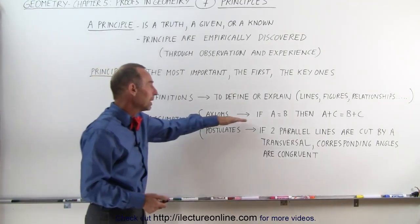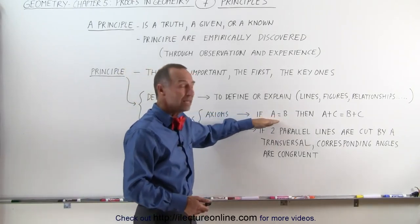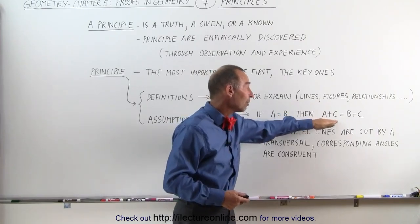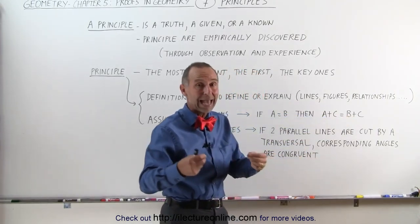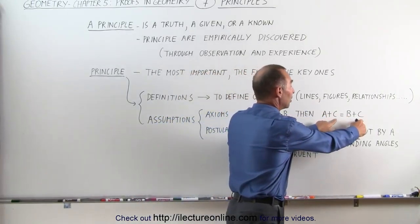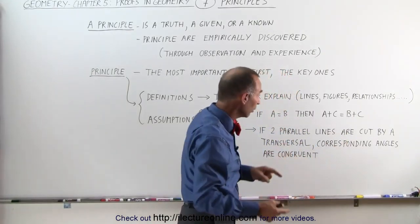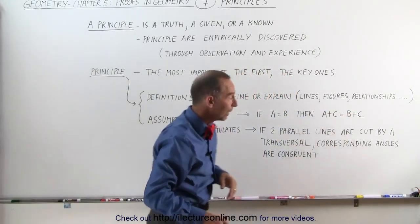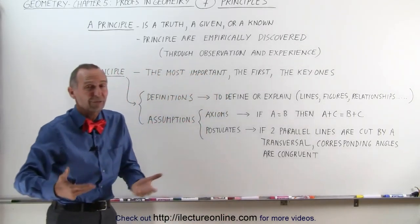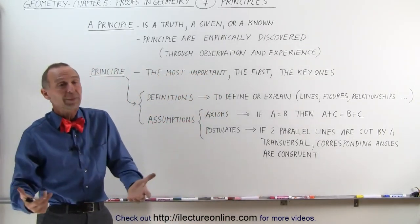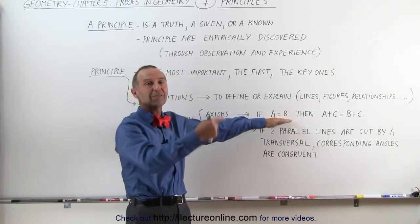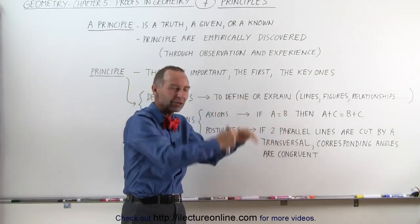A good axiom would be that if A is equal to B, if A and B are equals, then A plus C must equal B plus C, because when we add equals, C and C are equal to one another, to two other equals, A and B, then their sums must be equal. And that would be considered an axiom. From experience, we know that's always been the case. There's not a single example you can come up with that does not follow this. Therefore, we know that to be true.